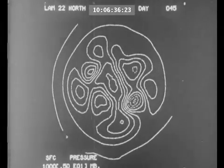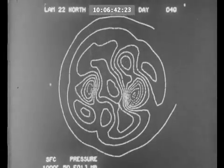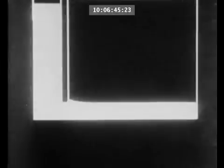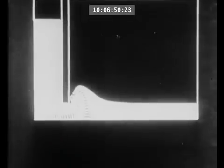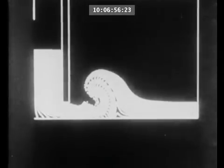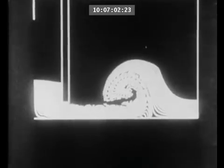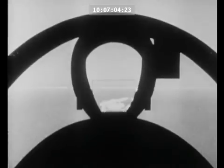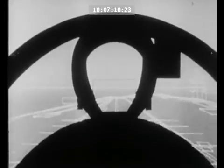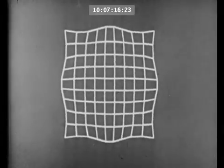A weather map of the earth, looking down on the north pole, drawn by a computer — each day's weather is compressed into seconds. This view shows the flow of water released from under the sluice gates of a dam. In this pilot's-eye view, you can simulate all sorts of landings on an aircraft carrier. Finally, the stress on a square piece of metal is depicted in a computer film.